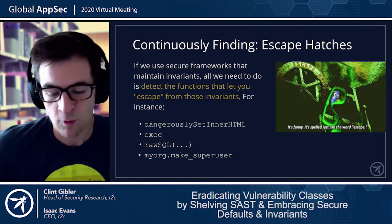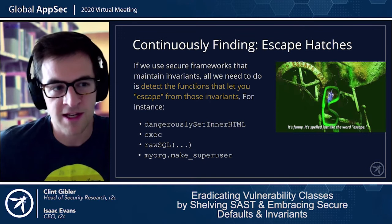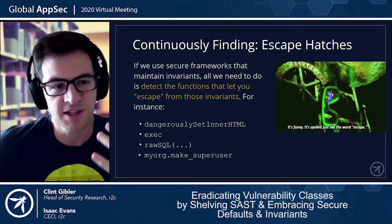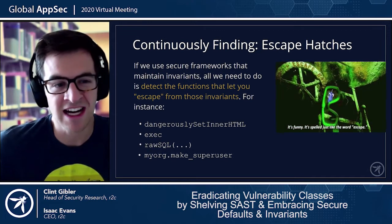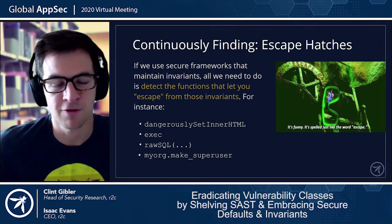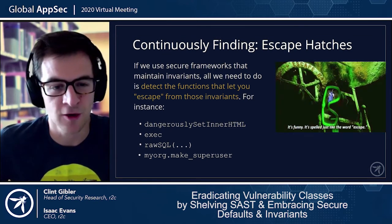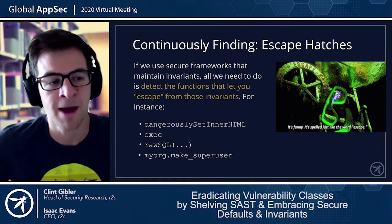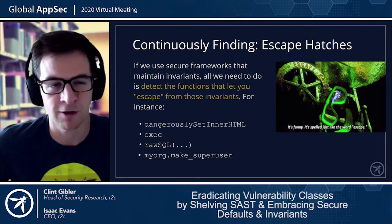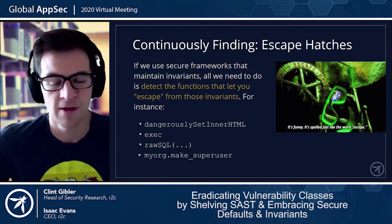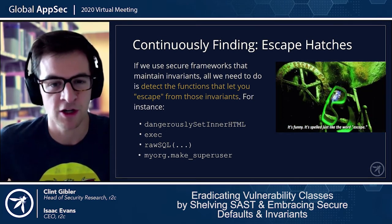What are we hoping to continuously find? If we're using secure frameworks that maintain invariants, we just need to detect the functions that let you escape from those invariants — escape hatches. For React, the escape hatch is dangerously set innerHTML. For remote code execution concerns in a memory-safe language, the escape hatch is a function like exec.